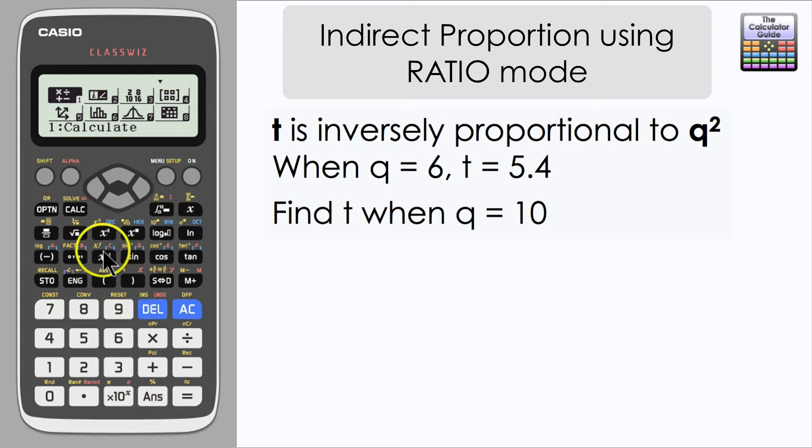T is inversely proportional to Q squared. When Q equals 6, T equals 5.4. And we need to find T when Q equals 10.